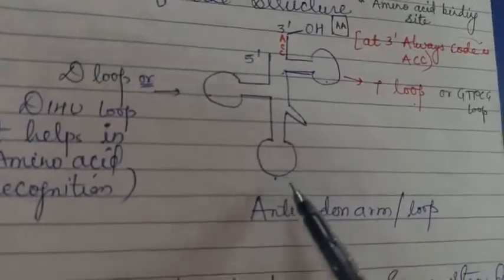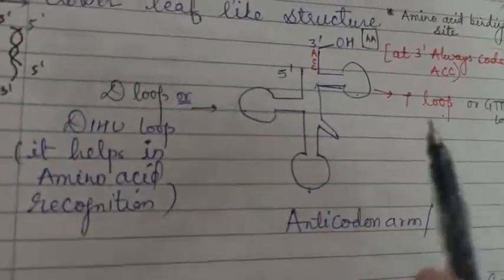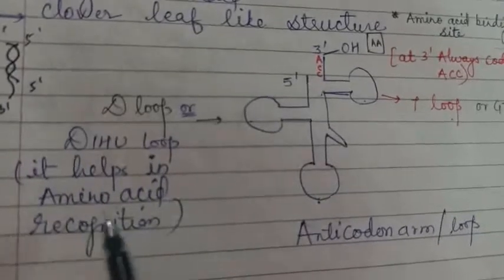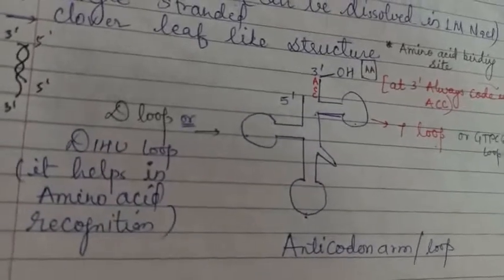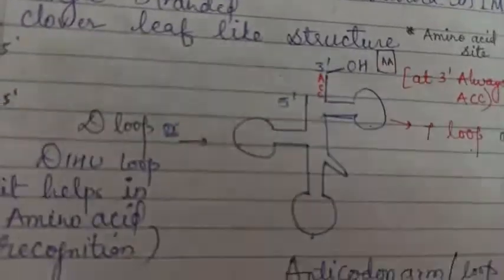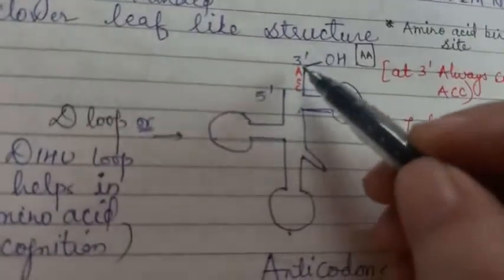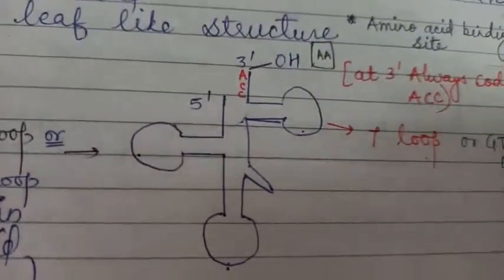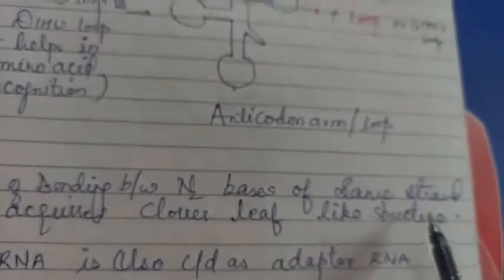In this structure there are three loops. This loop is called T loop or GTPC loop. At the T loop, at the three dash end where hydroxyl group is present, it always codes for ACC - adenine cytosine cytosine, and this is the amino acid binding site. This loop is called anticodon arm or anticodon loop. The third loop is called D loop or DIHU loop, and it helps in amino acid recognition during protein synthesis.